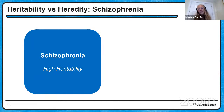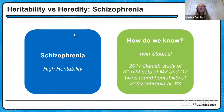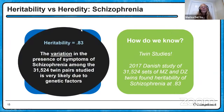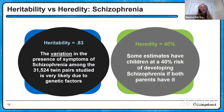Moving this to schizophrenia: schizophrenia has high heritability, and we know that from twin studies. Scientists can take identical twins — monozygotic — and dizygotic fraternal twins, and compare those raised together versus raised apart. A 2017 twin study of tens of thousands of twins found the heritability of schizophrenia to be about 0.83. That means the variation in the presence of symptoms of schizophrenia among that population is very likely due to genetic factors. When we talk about heredity, some estimates put children at about 40% risk of developing schizophrenia if both parents have it — but those are two different numbers.